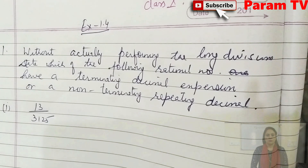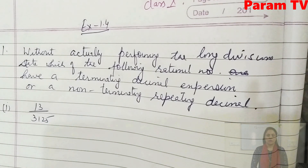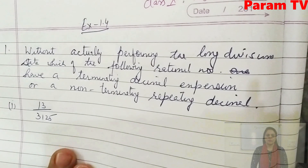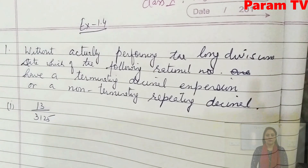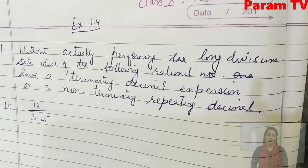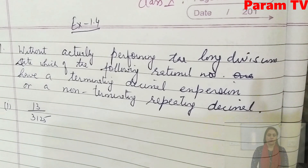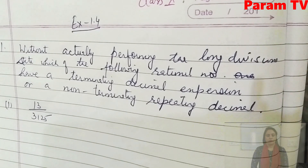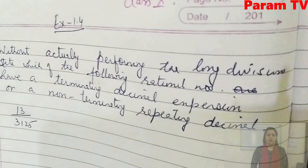The first question is: without actually performing the long division, state which of the following rational numbers have a terminating decimal or a non-terminating repeating decimal. So you have to know, without dividing them, just by looking at the denominator, whether it is a terminating decimal or a non-terminating repeating decimal.